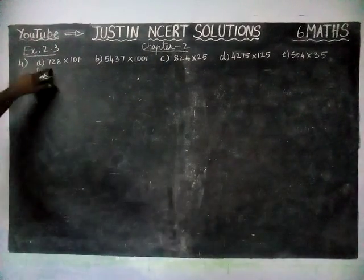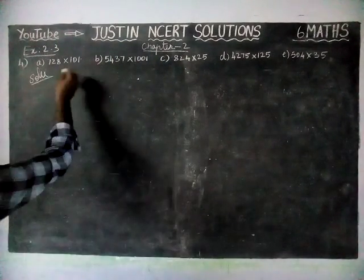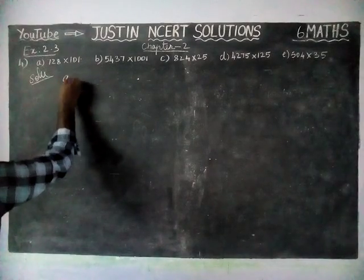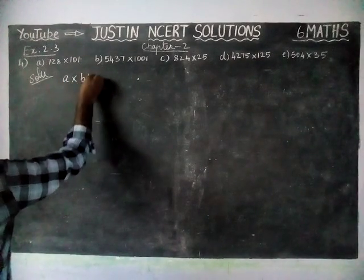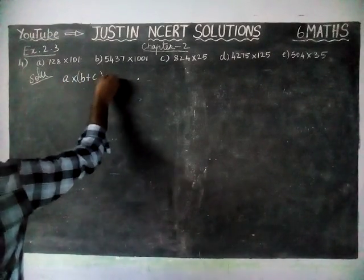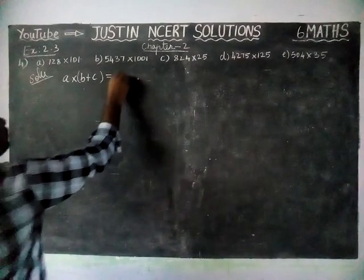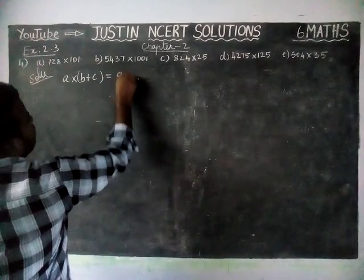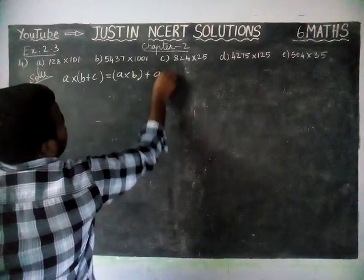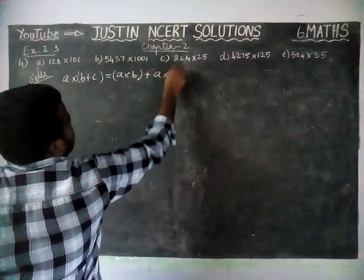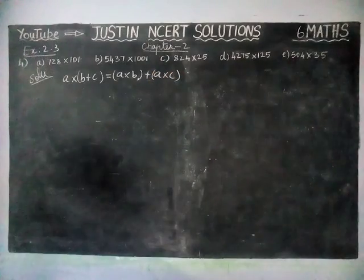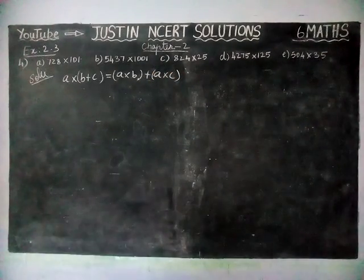Now we are going to write the distributive property first. A into (B plus C) is equal to A into B plus A into C. This is the distributive property of multiplication over addition.